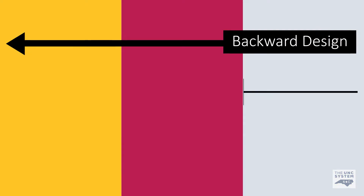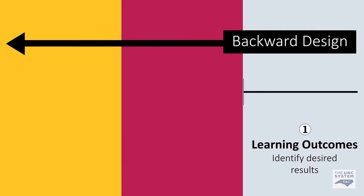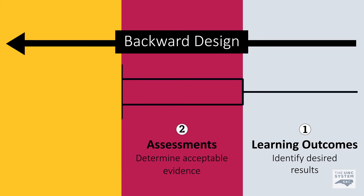Now that you have prepared your situational analysis, course learning outcomes, and synchronicity plan, you're ready to consider the next step of backward design: assessing your learning outcomes. We have heard from a lot of faculty that they're unsure how to convert some of their existing assessments into an online environment. Get ready to learn about best practices and appropriate approaches for online assessments.